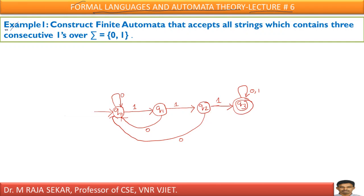Example 1: Construct finite automata that accepts all strings which contain 3 consecutive 1s. 3 consecutive 1s means what? 1, 1, 1.